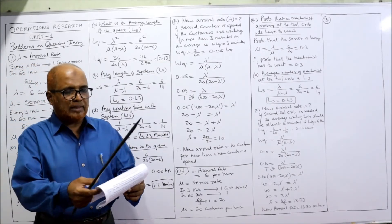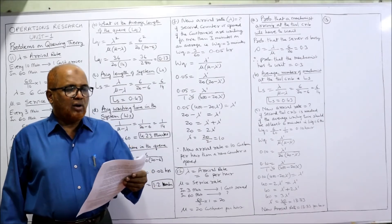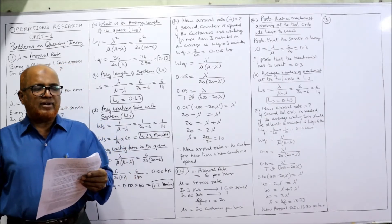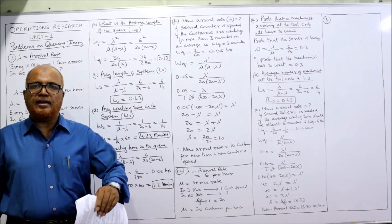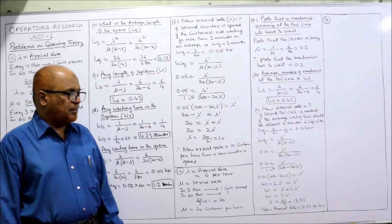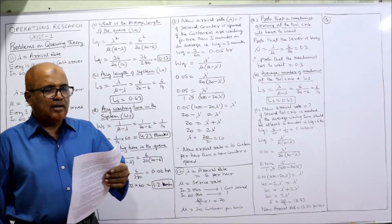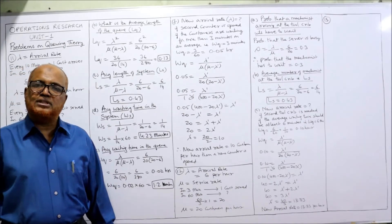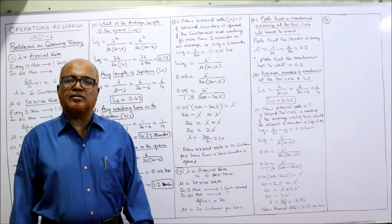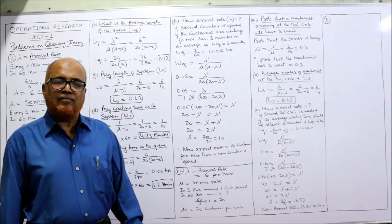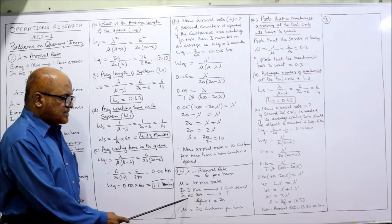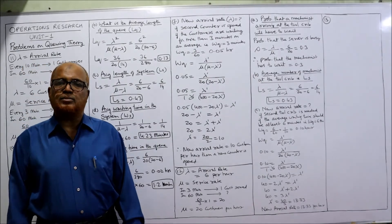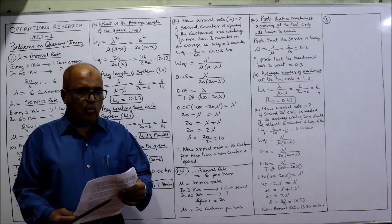Now problem 12. The arrival of machinists at a tool crib follows a Poisson distribution at an average rate of 6 per hour — so the arrival rate lambda is 6 customers per hour, directly given. The service time at the tool crib is exponentially distributed with an average of 3 minutes. In 3 minutes one customer is served, so in 60 minutes that is 60 divided by 3 equals 20 customers per hour. So mu equals 20 customers per hour.